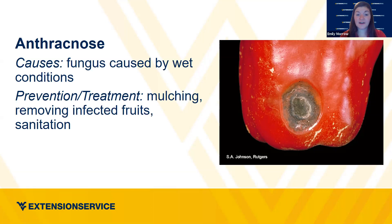Anthracnose is a fungus caused by wet conditions — you'll start to notice this pattern with many diseases; they usually need wet, humid, or hot conditions to thrive. Anthracnose can present itself in many different plants. It's common in trees and shrubs; this example shows what it looks like in peppers. Prevention or treatment for this disease includes mulching, removing infected fruits, and sanitizing — either sanitizing your tools or sanitizing your garden by removing plant debris.